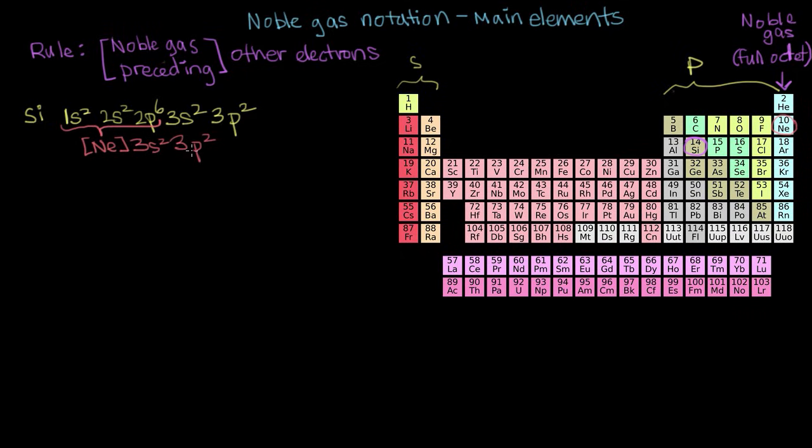The other thing you might notice is that these other electrons here that we wrote outside of the brackets, these are our valence electrons. So writing your electron configuration this way using noble gas notation makes it really obvious where your valence electrons are and what kind they are.